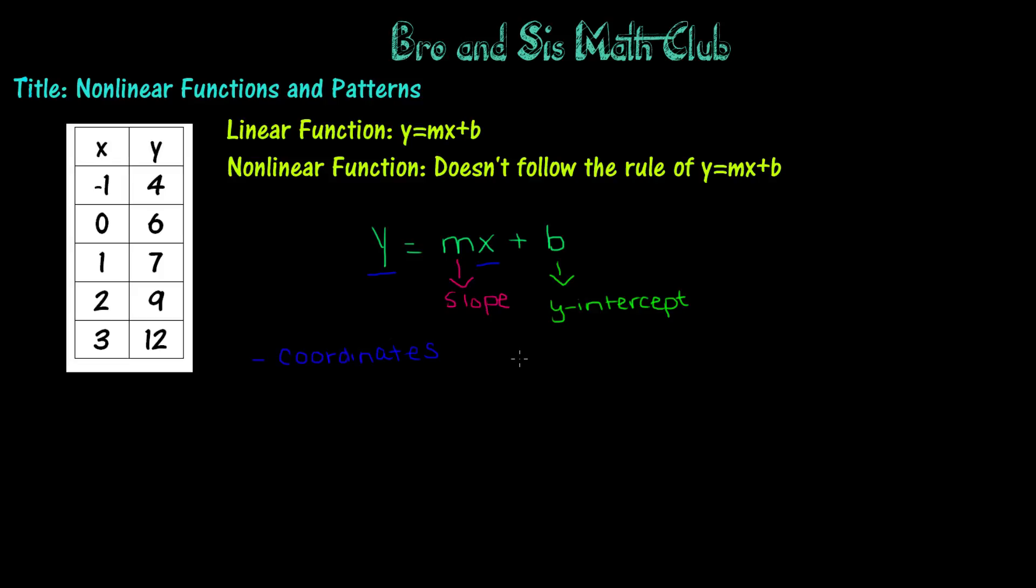So in other words, we're basically trying to find a pattern in our x values and y values. So let's go ahead and find the pattern and determine the slope. In our x coordinates, we see that it increases by 1 each time.